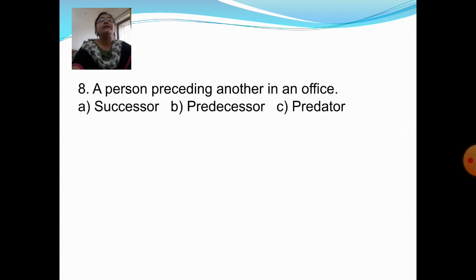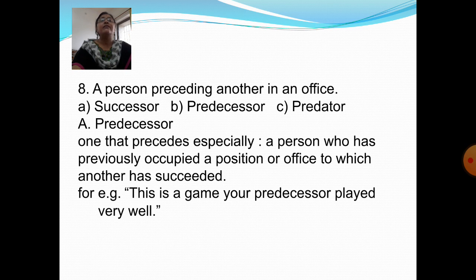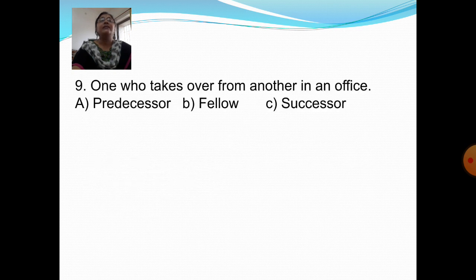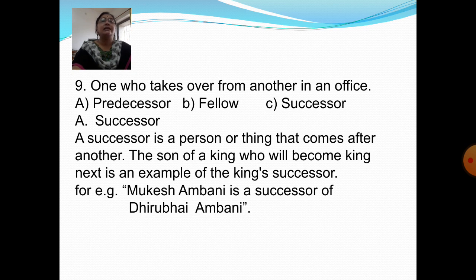Next question: A person preceding another in an office. Option A: Successor. Option B: Predecessor. Option C: Predator. Answer is Option B: Predecessor. Predecessor means one that precedes, especially a person who has previously occupied a position or office to which another has succeeded. For example, this is a game your predecessor played very well. Next question: One who takes over from another in an office. Option A: Predecessor. Option B: Fellow. Option C: Successor. Answer is Option C: Successor. A successor is a person or thing that comes after another. For example, Mukesh Ambani is a successor of Dhirubhai Ambani.